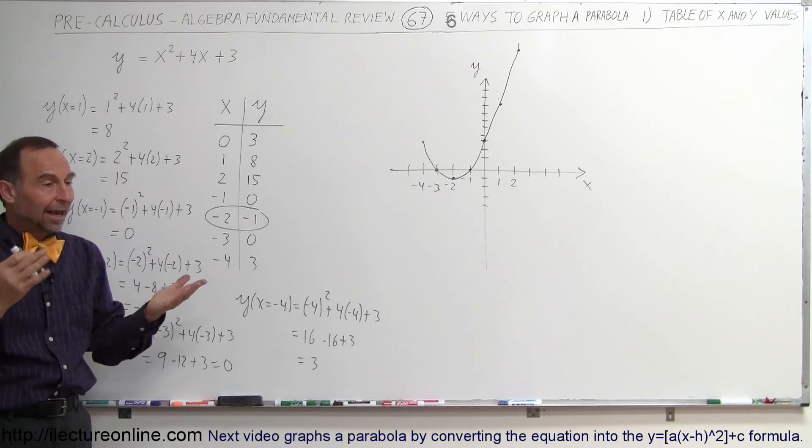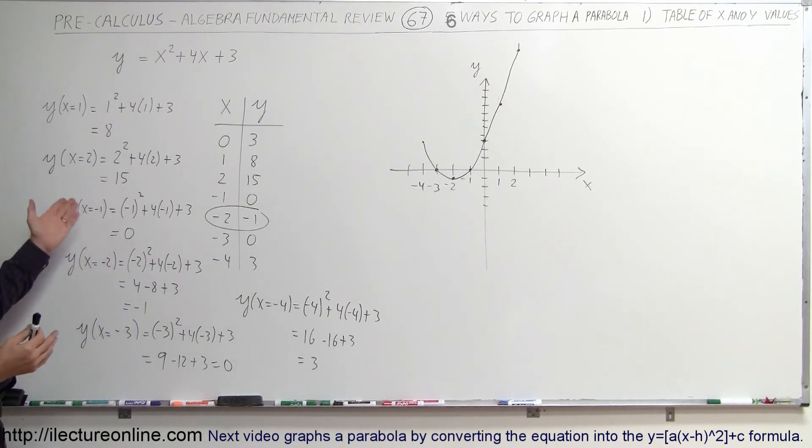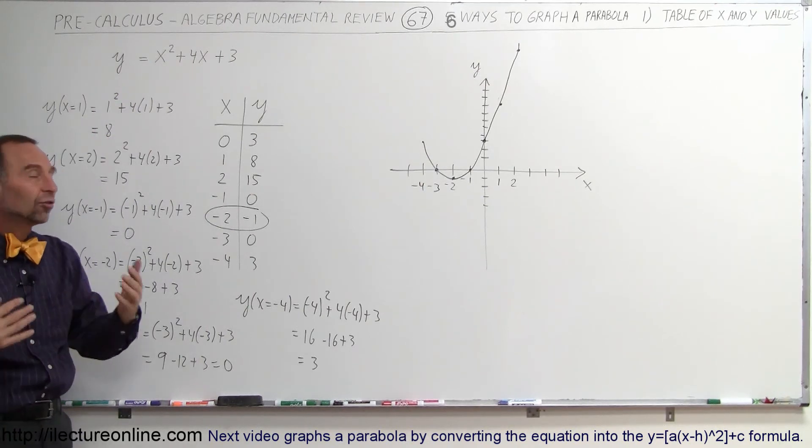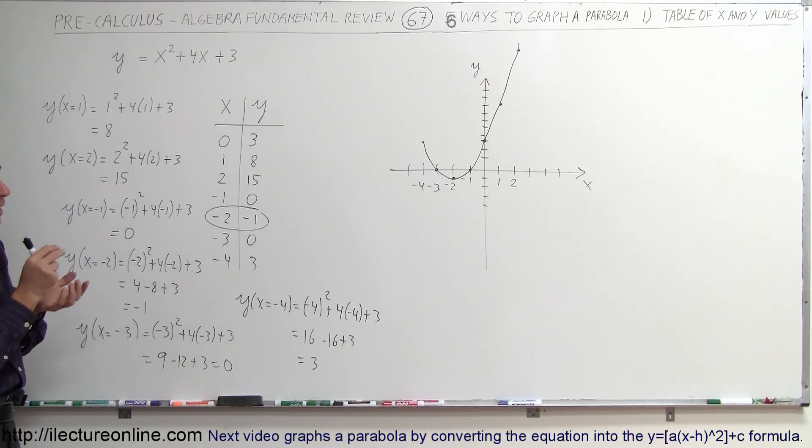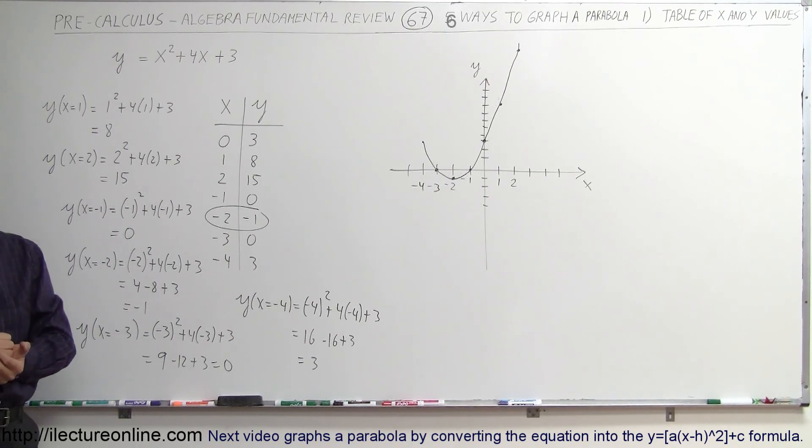We use a table of values. And no matter how complicated the equation is, this looks like a very nice parabola, but we can have some very odd numbers, fractions, decimals. We can still find the x and y corresponding values, plot them on the graph, and make a parabola. And it's a good technique to find what the parabola looks like. And that's how we do that.